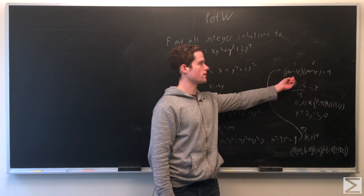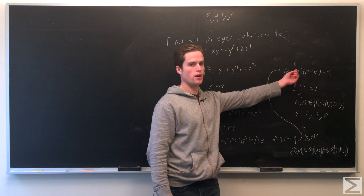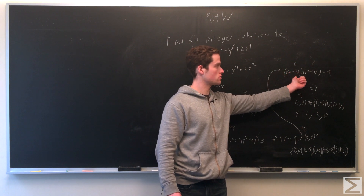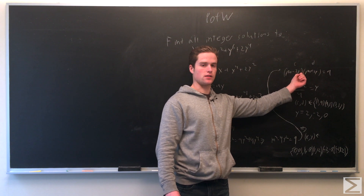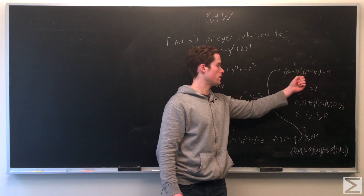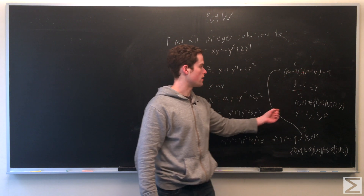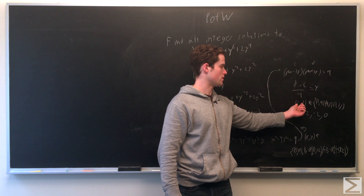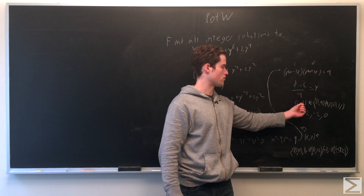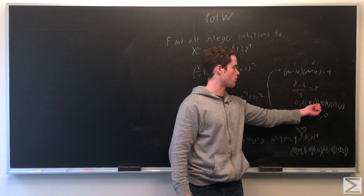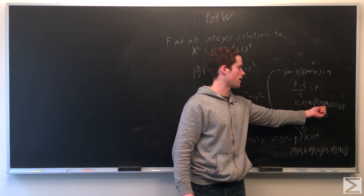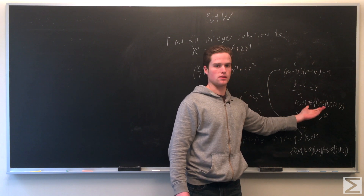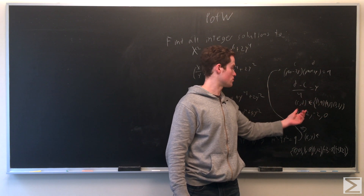So we have m squared minus 4y squared equals 9, which factors as m minus 2y times m plus 2y equals 9. These are both integers, so this is some factorization of 9. The factor pairs c and d must be one of 1 and 9, 9 and 1, or 3 and 3 — or their negatives, which give the same solutions.